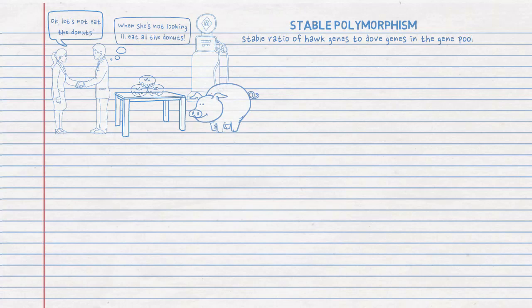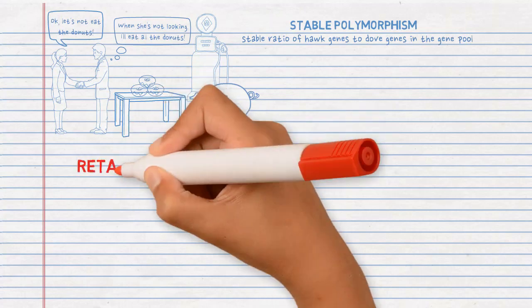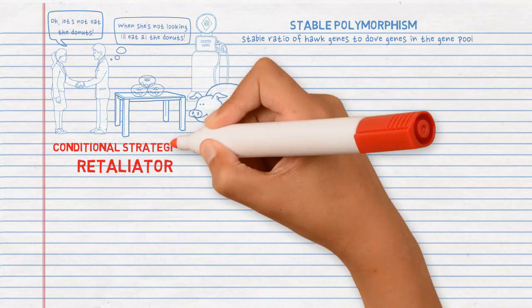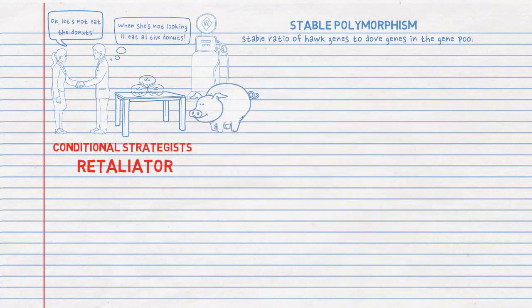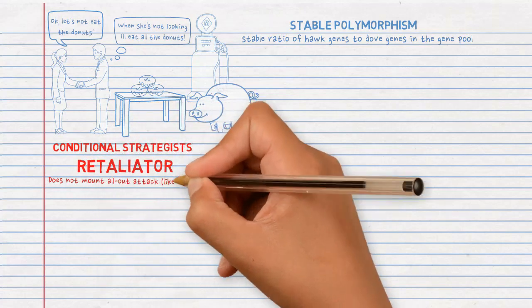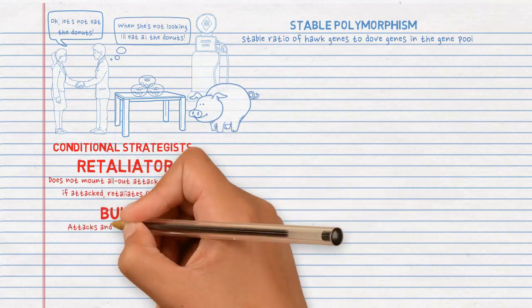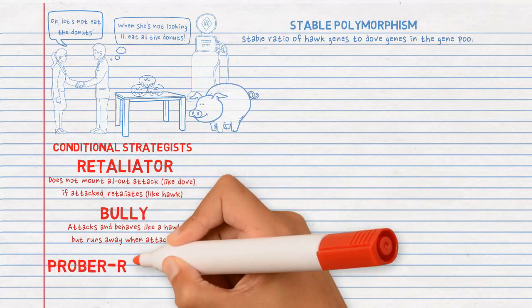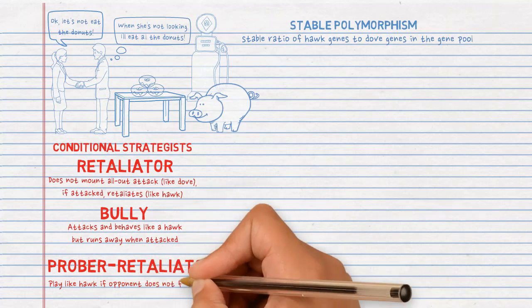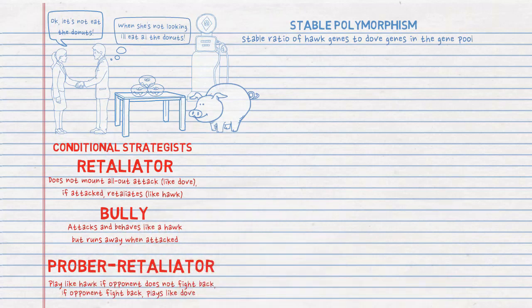Hawk and dove is a very simple model, but it is useful for understanding a point. We can introduce more complex strategies. Maynard Smith and Price introduced a more complex strategy known as the Retaliator. The Retaliator is a conditional strategist in that its behavior depends on the opponent. It acts like a dove in the beginning by not mounting all-out attacks like a hawk. However, if attacked, it will retaliate and behave like a hawk. If the Retaliator meets another Retaliator, it plays like a dove. Two more conditional strategists can be introduced: the Bully, who behaves like a hawk but runs away when attacked; and the Prober-Retaliator, who continues to play like a hawk if its opponent does not fight back, but reverts to playing dove if its opponent fights back. If the Prober-Retaliator is attacked, it retaliates like a Retaliator.